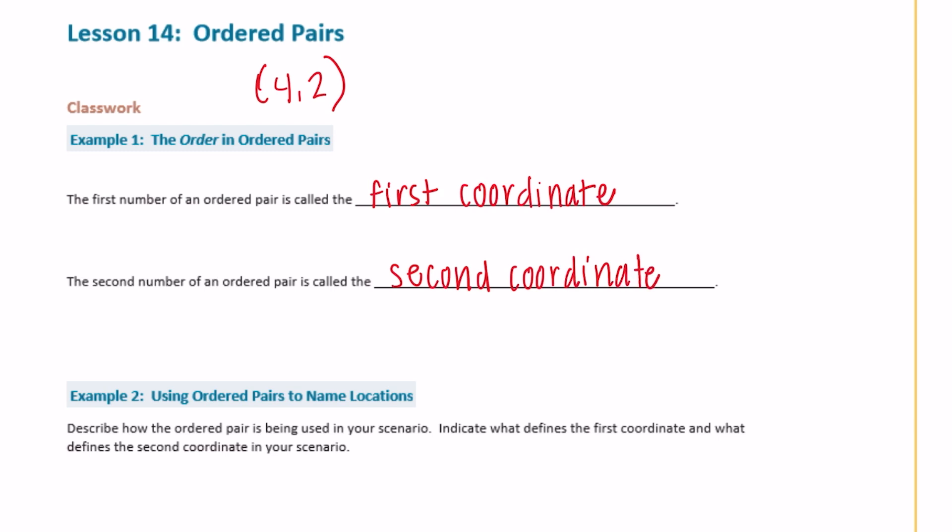And the second number of an ordered pair is called the second coordinate. Although, I think that it's also important to remember that this is called the x coordinate, and this is the y coordinate, and that will be important later on.